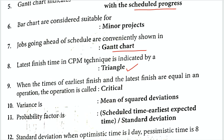When the earliest finish time and the latest finish time are equal, the float is zero, and that activity is called critical.